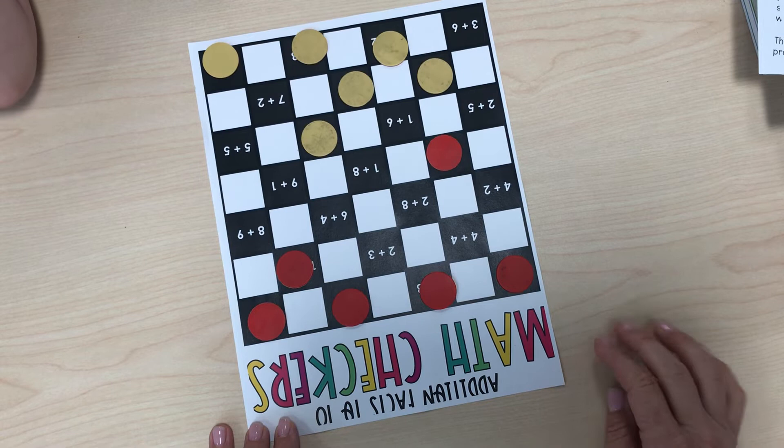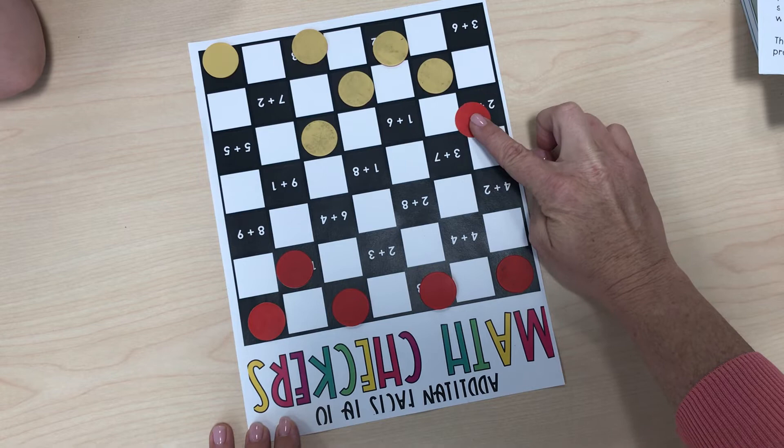It's just easy. Let's see. I think I'm going to go this way. 2 plus 5 is 7. And I think I'm safe here because he can't jump me. There's no place for him to go.